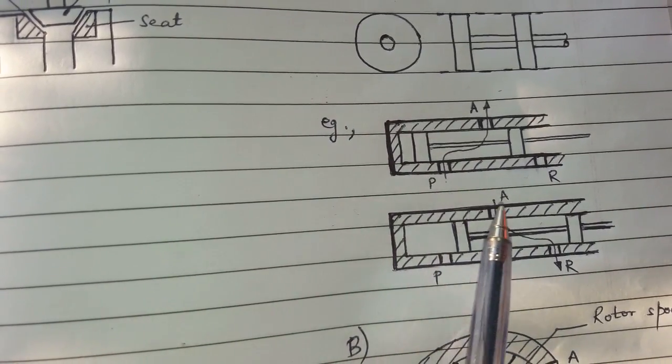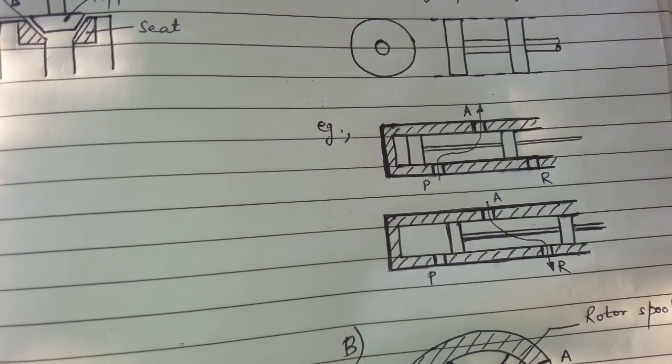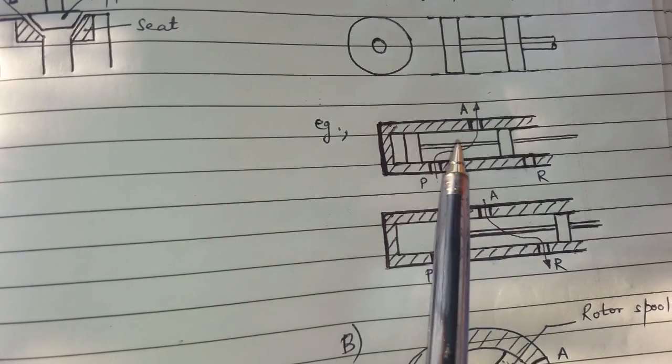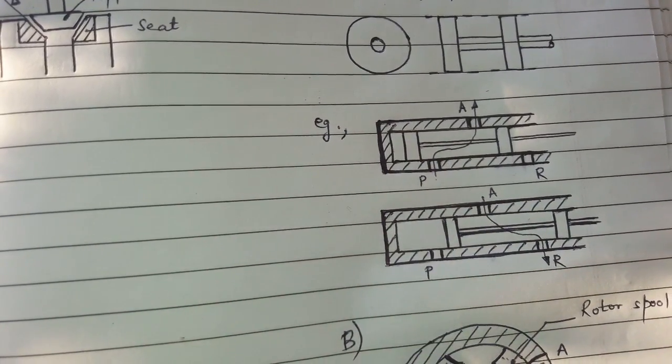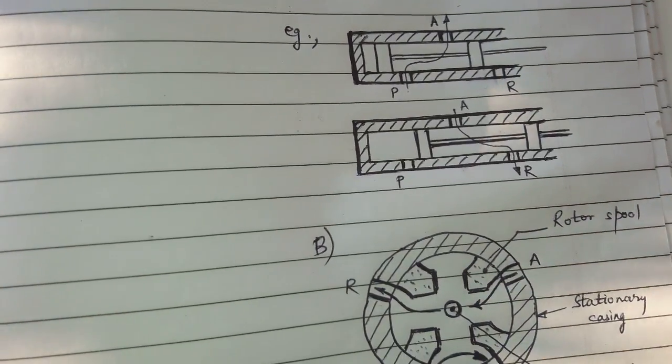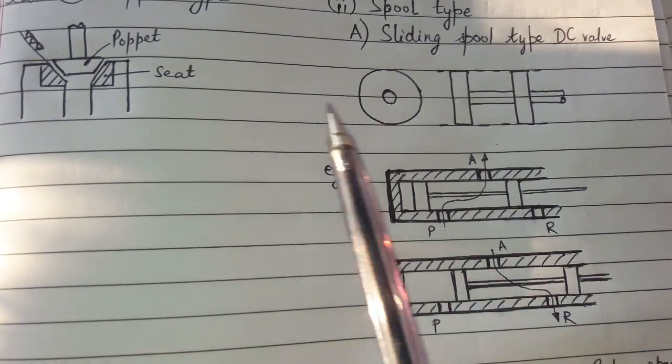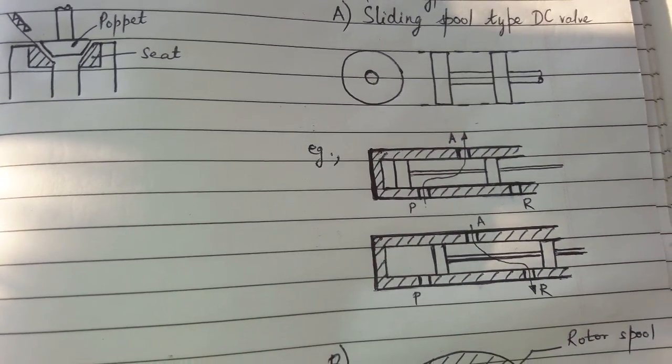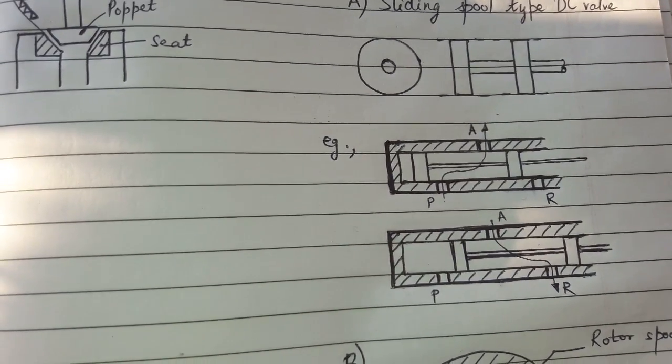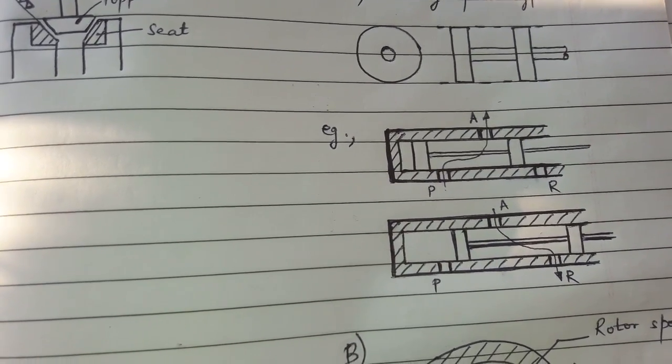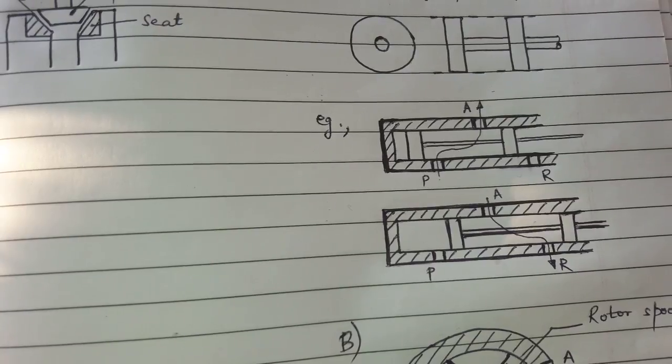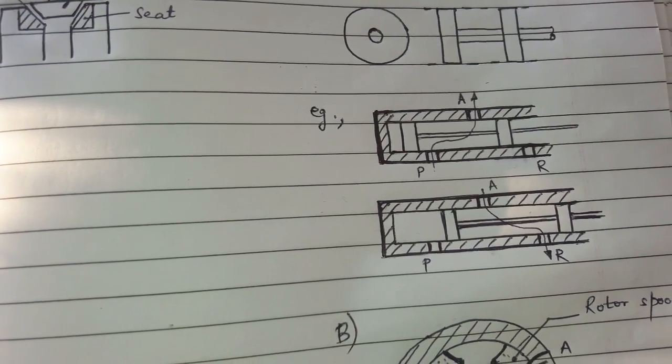The sliding spool opens or closes the port. The ports are the drilled hole in the valve body. The advantage is simple in construction. Cost is low. These valves are permanently balanced. Sliding spool type DC valve is most widely used valve.